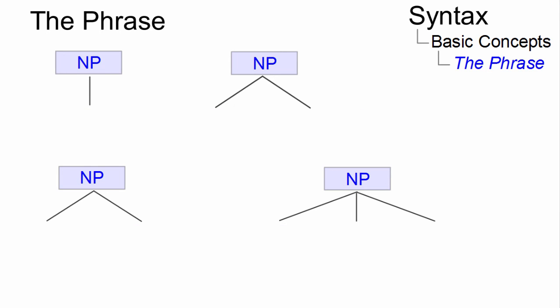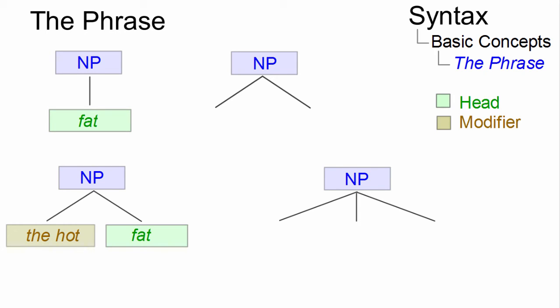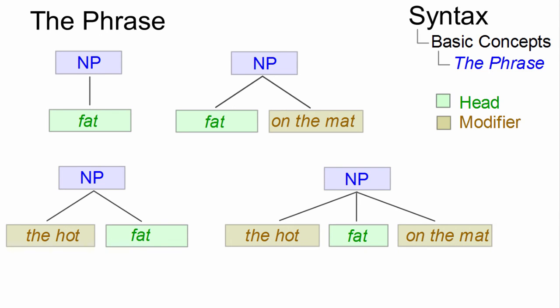Here are four variants of a noun phrase: One with a head only, 'fat.' One with a pre-modifier, 'the hot fat.' One with a post-modifier, 'fat on the mat.' And one with both the pre-modifier 'the hot' and the post-modifier 'on the mat.'